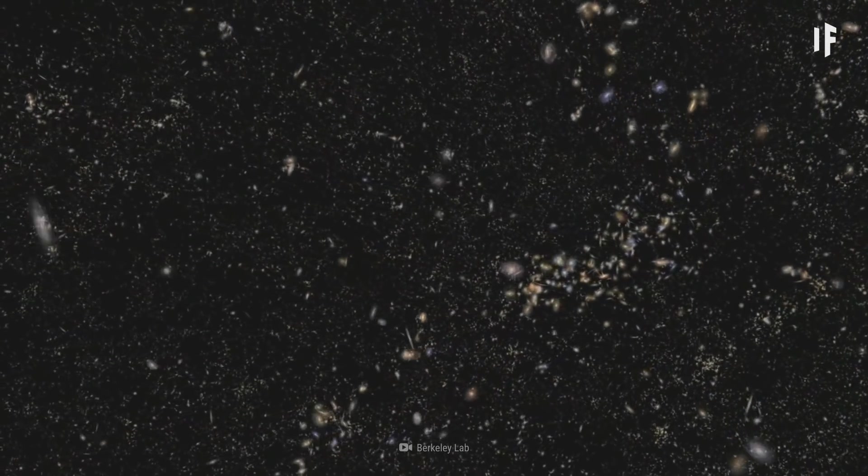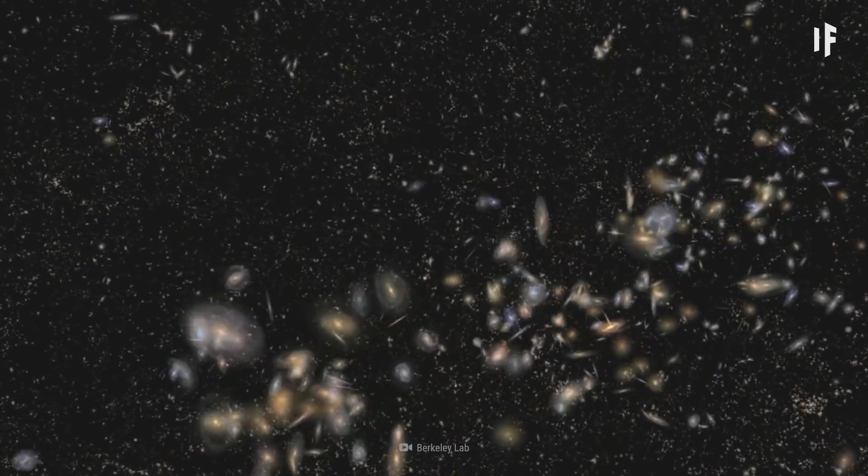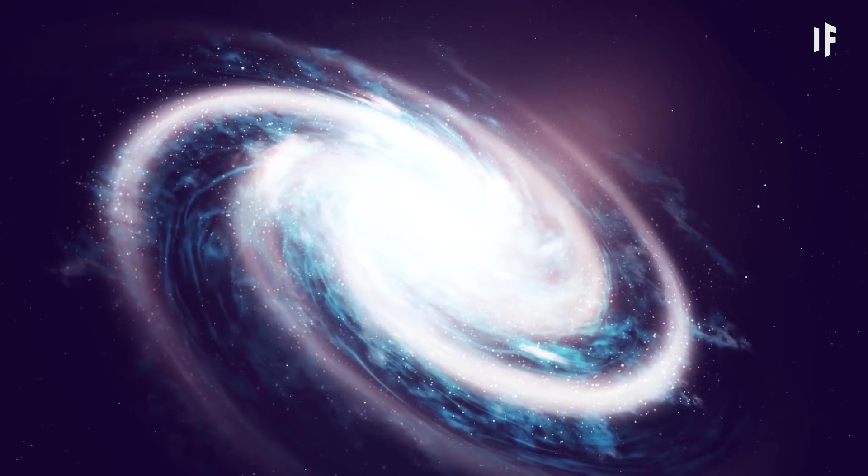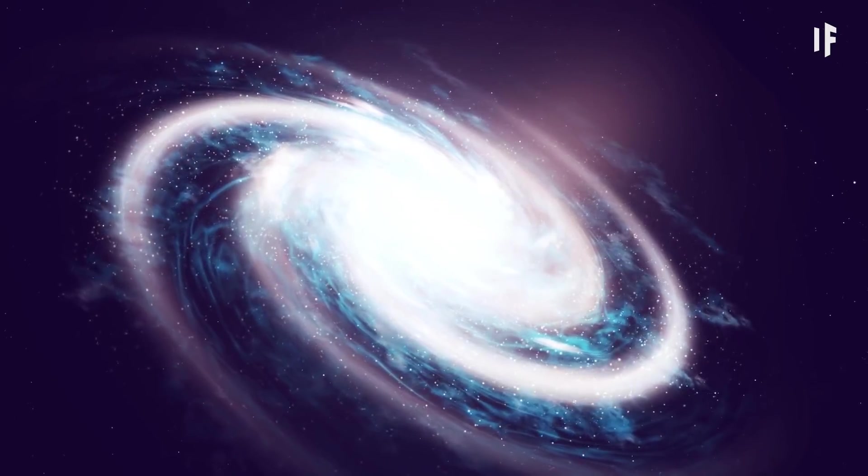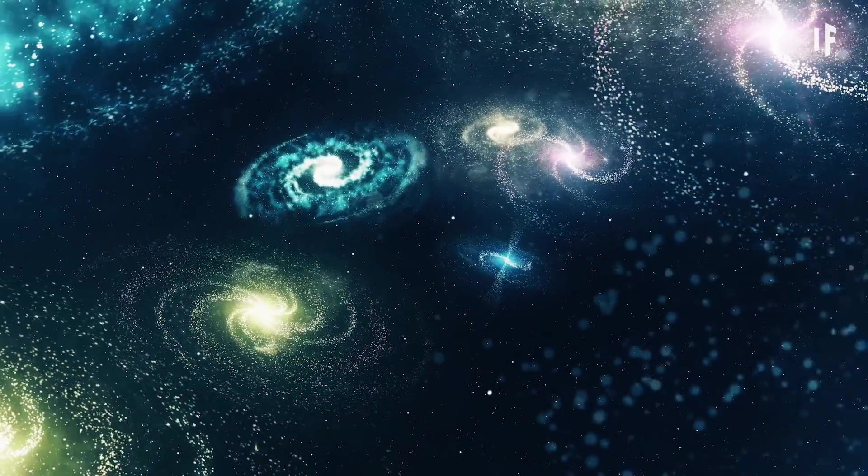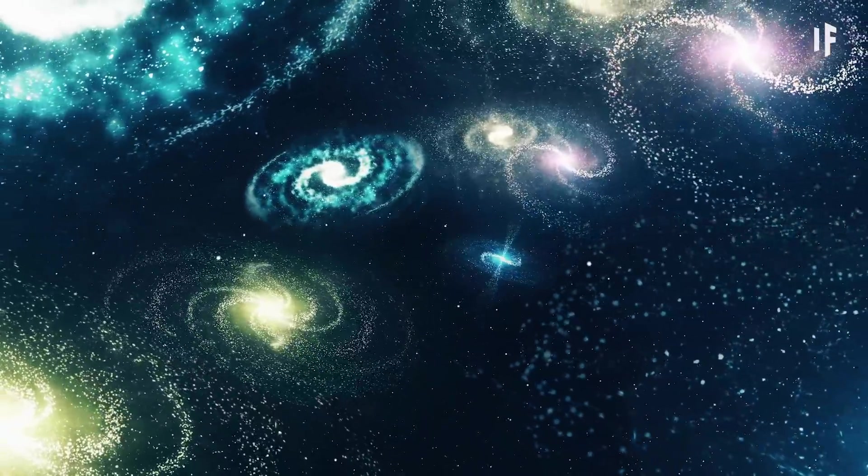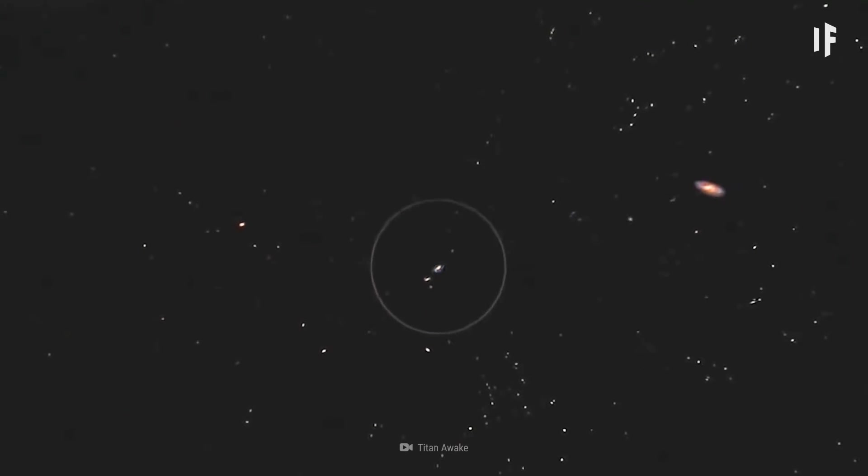Before we get ahead of ourselves, let's get to know these 100,000 galaxies a little better. Our galaxy, the Milky Way, belongs to a group of a few dozen galaxies called the Local Group. Cool. Just like the Sun's gravity pulls the Earth toward it, our galaxy is pulled towards the other galaxies in our Local Group.